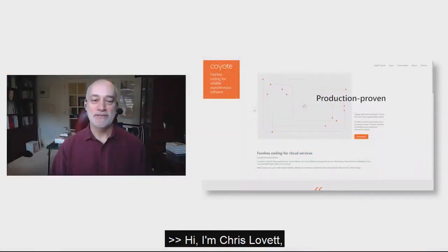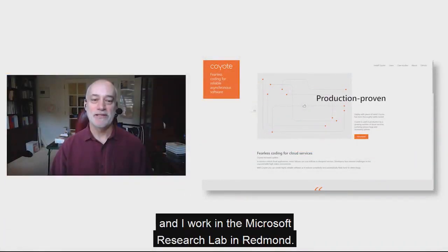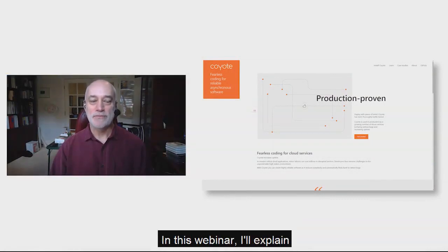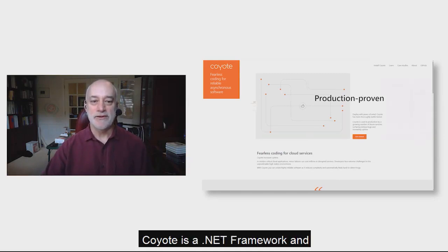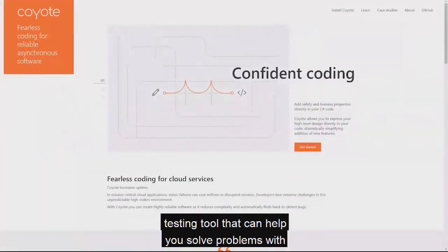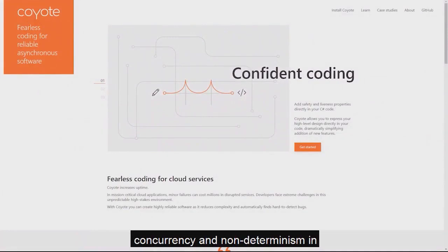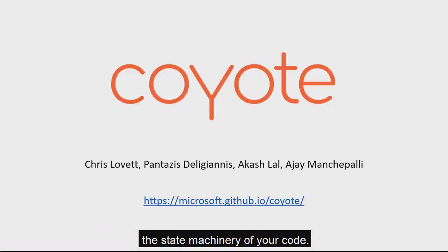Hi, I'm Chris Lovett and I work in the Microsoft Research Lab in Redmond. In this webinar, I'll explain the Coyote project and walk through some example code. Coyote is a .NET framework and testing tool that can help you solve problems with concurrency and non-determinism in the state machinery of your code.